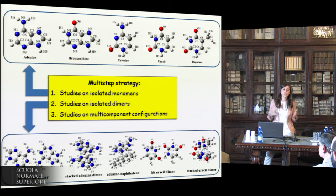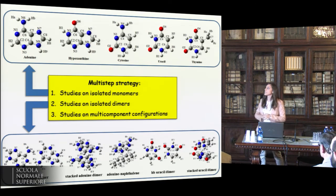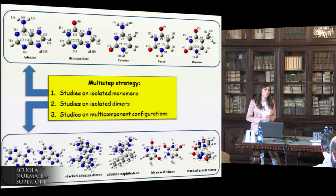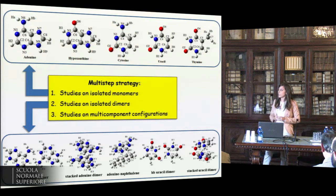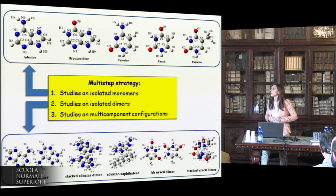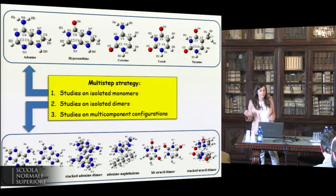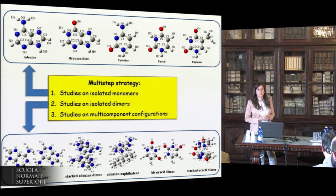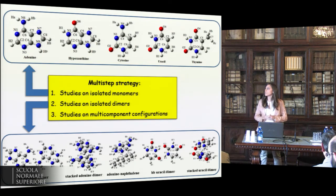A plausible way of studying the intricate interactions characterizing such systems is through a multi-step strategy: firstly on isolated monomers, secondly on isolated dimers, and finally on multi-component configurations. I will discuss the first two stages, focusing in particular on the monomers adenine, hypoxanthine, cytosine, uracil, and thymine, and the hydrogen-bonded adenine-uracil dimers, and the heterodimer adenine-naphthalene.